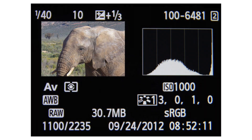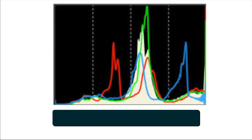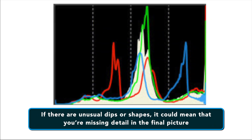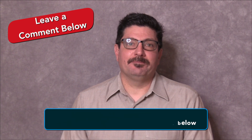As long as you keep that in mind, in general there is no good or bad histogram. Just remember, histograms are a type of graph that shows how much brightness is distributed throughout your image. Most images should have an arch-shaped histogram without too much black or white at either extreme edge. If there are unusual dips or shapes, it could mean that you're missing detail in the final picture. If this is making sense to you, put 'I've got it' in the comments section below.